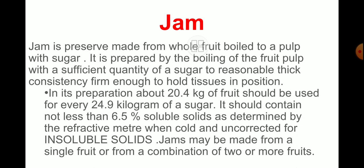Jam is the preserve made from the whole fruit boiled to a pulp with sugar. The pulp is to be taken out from the fruit and a required amount of sugar is added and boiled. It is prepared by the boiling of the fruit pulp with a sufficient quantity of sugar to a reasonably thick consistency, firm enough to hold the tissues in position.